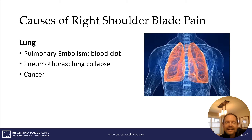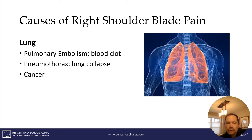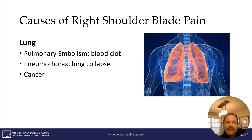The next cause is the lungs. The lungs can actually cause significant right shoulder blade pain. Common examples include a pulmonary embolus, otherwise known as a blood clot. Another serious concern is a pneumothorax, otherwise known as a collapsed lung. And then there's cancer.